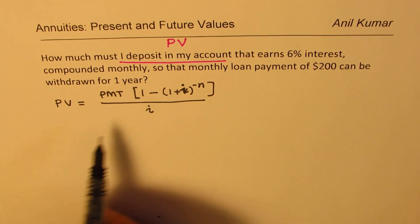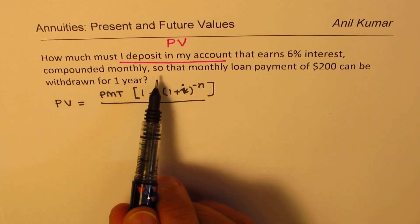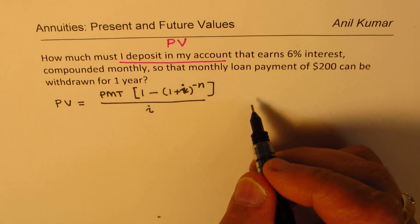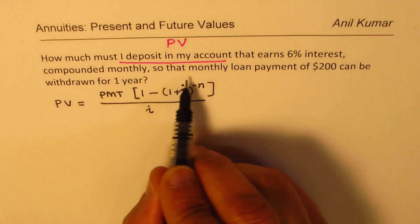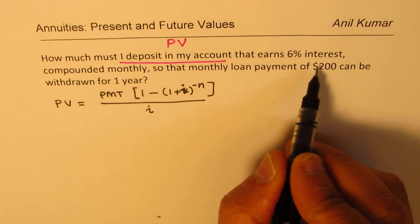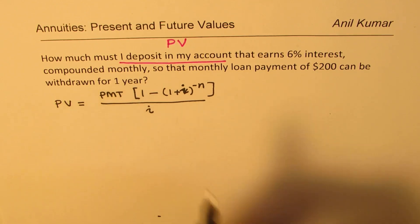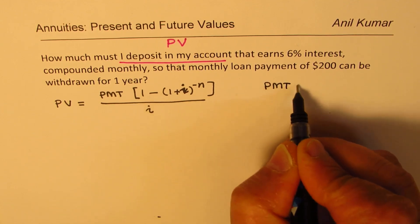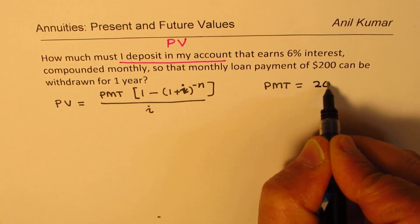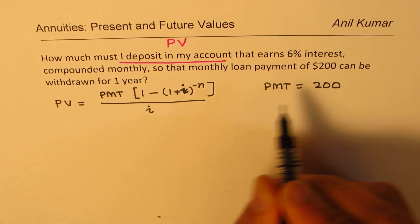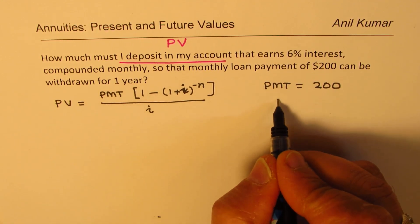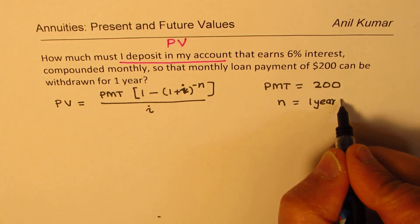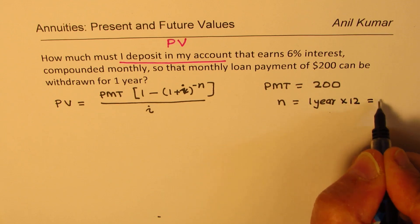Now, in this, what are we given? We have 6% compounded monthly so that the monthly loan of $200 can be withdrawn for one year. So total monthly loan is how much? We write PMT is $200. That is the monthly loan for one year. So the duration is one year and in a year, since we are doing it monthly, we have to do 12 installments. So n is 12.